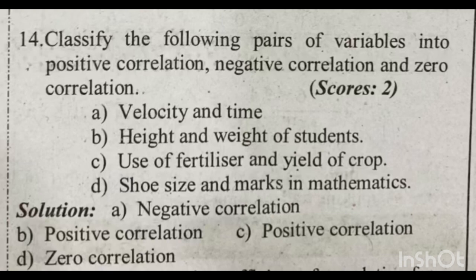Classify the following pairs of variables into positive correlation, negative correlation, and zero correlation. We have a few pairs, and each pair may or may not have a relation to each other. First pair: velocity and time.